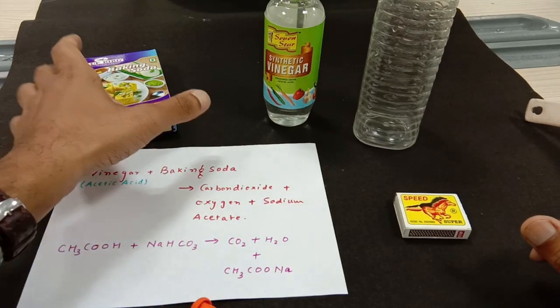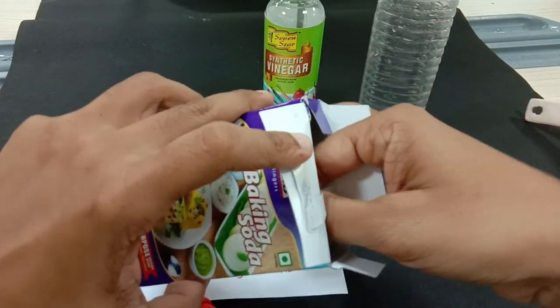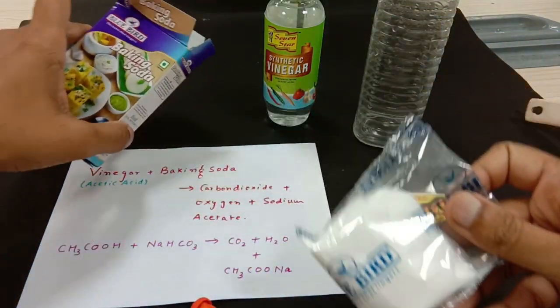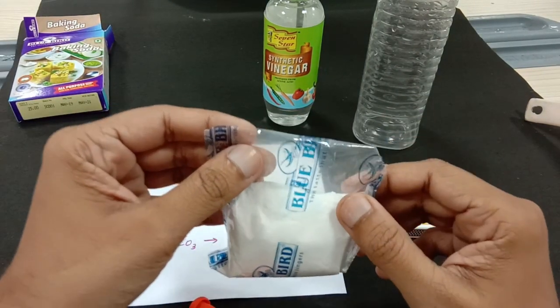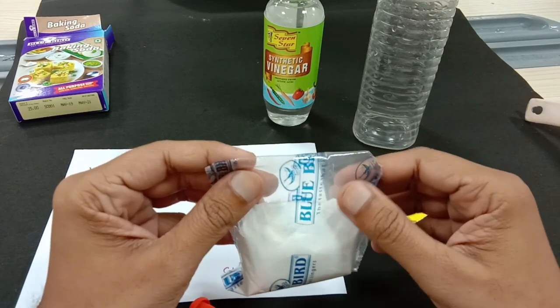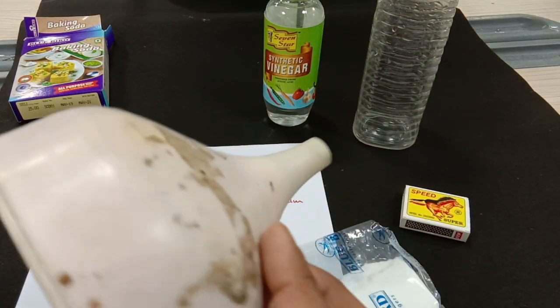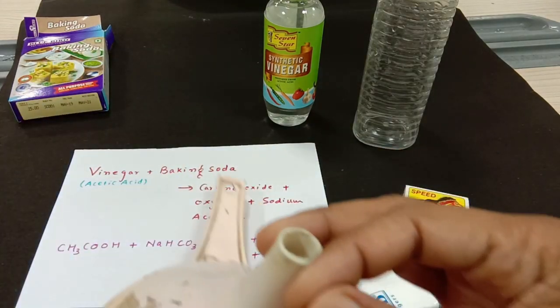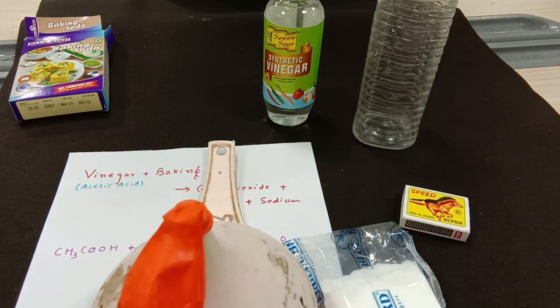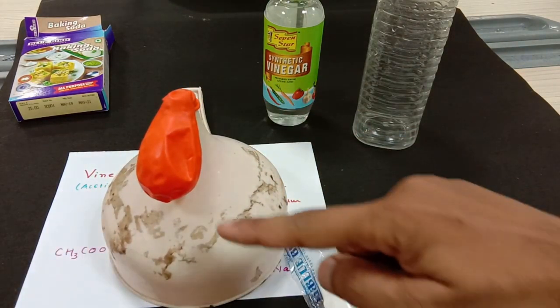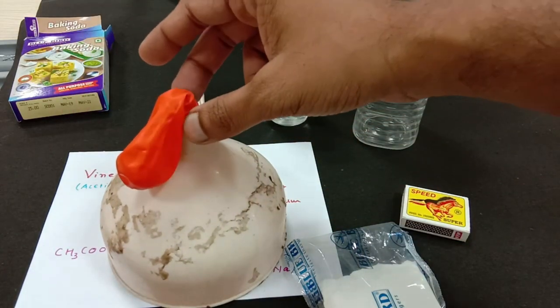First of all, let me open up this baking powder, and now this baking powder I am supposed to fill it in this balloon. I would be needing the help of the funnel in doing so. Here is my funnel and I am going to invert the funnel and attach the balloon like this. Hopefully all of you can see that the balloon is being attached with the funnel in this way.